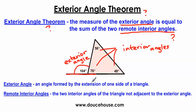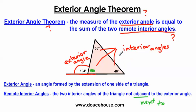An exterior angle is formed by the extension of one side of the triangle, so we have an extended side of the triangle and we have an exterior angle. What are remote interior angles? They're the two interior angles of the triangle not adjacent to the exterior angle. Adjacent means next to. The two interior angles of the triangle not next to the exterior angle — this is the adjacent interior angle to the exterior angle, so if I eliminate this angle, I automatically have the two remaining remote interior angles.